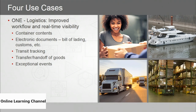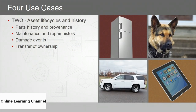The first IBM use case is logistics for improved workflow and real-time visibility, including tracking container contents, electronic documents such as bills of lading and customs documents, transit tracking of shipments, transfer and handoff of goods, and handling exceptional events as they occur. The second is asset lifecycles and history — parts history and provenance, maintenance and repair history, damage events, and transfer of ownership. This is particularly valuable for companies dealing in aircraft, construction equipment, or telecoms — assets with long life expectancies requiring ongoing maintenance.